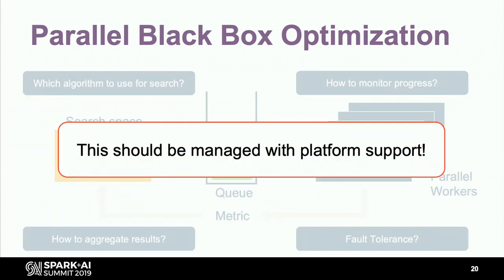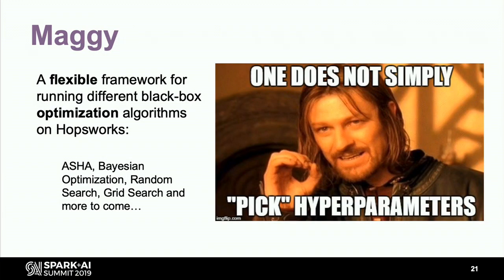We said this should be managed with platform support, and that's why we built MAGI — a flexible framework for running different black-box optimization algorithms with Spark on HopsWorks. It supports asynchronous successive halving, Bayesian optimization, random search, grid search, and more to come.